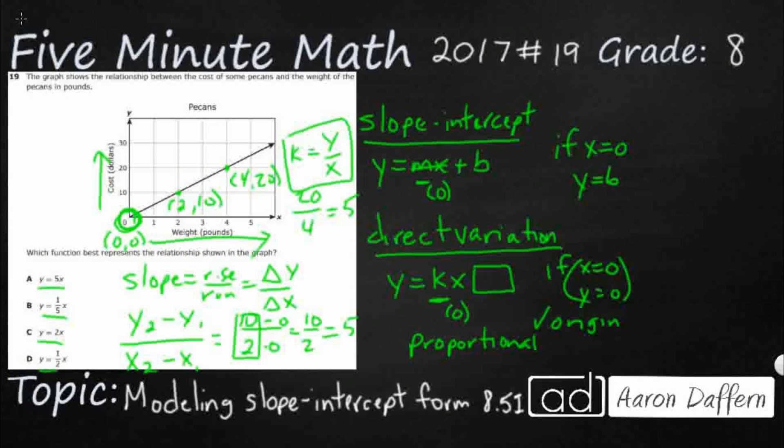And so let's see what that looks like in here. So if I'm going to use this y equals kx, then y equals my k, my slope is 5. My answer here is A.